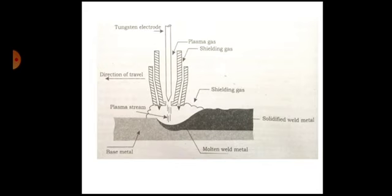This can be seen in this diagram. The nozzle has separate passages for gases for producing plasma and for shielding gas. There are two passages, one for providing the plasma gas and another for providing shielding gas.